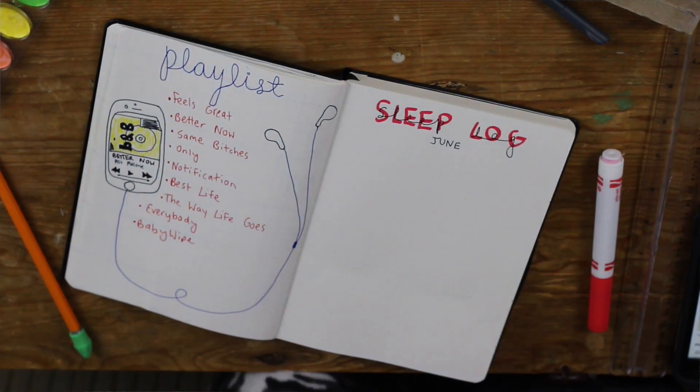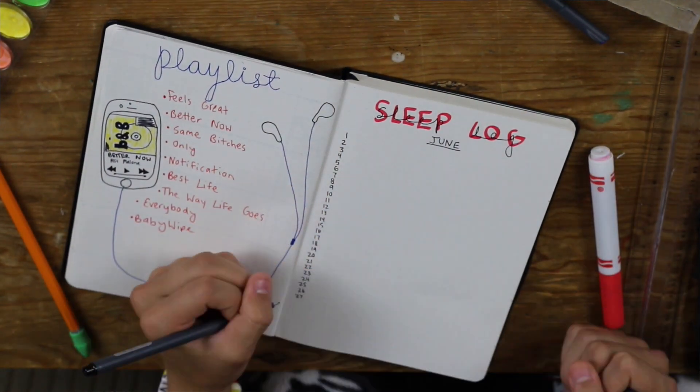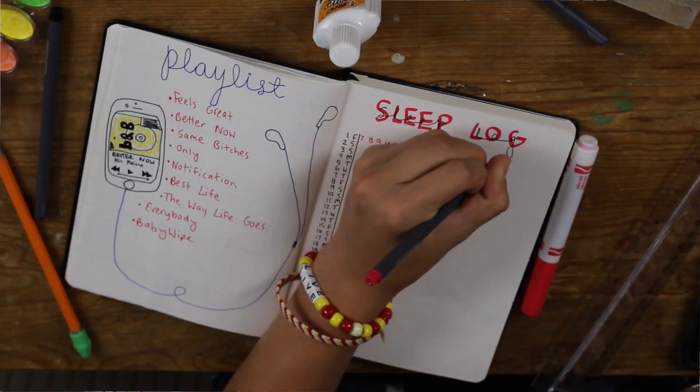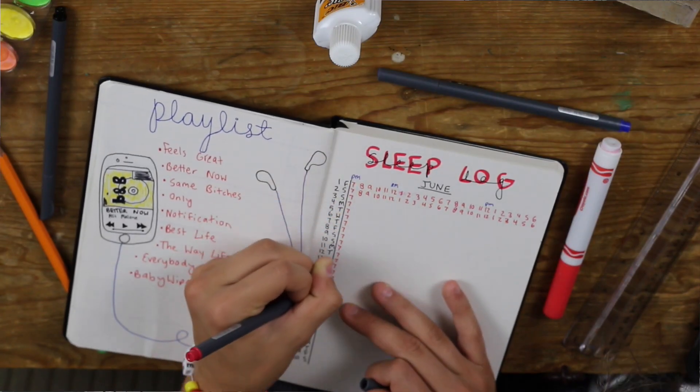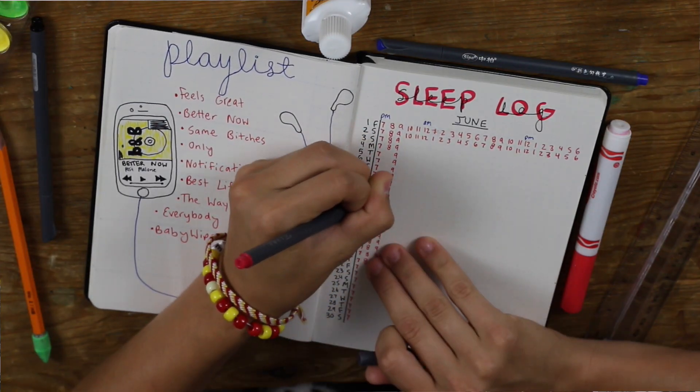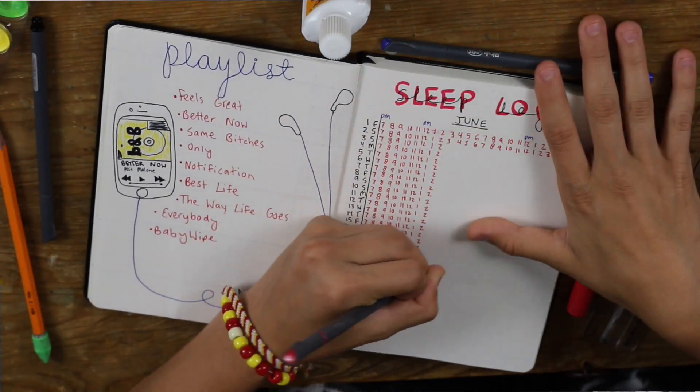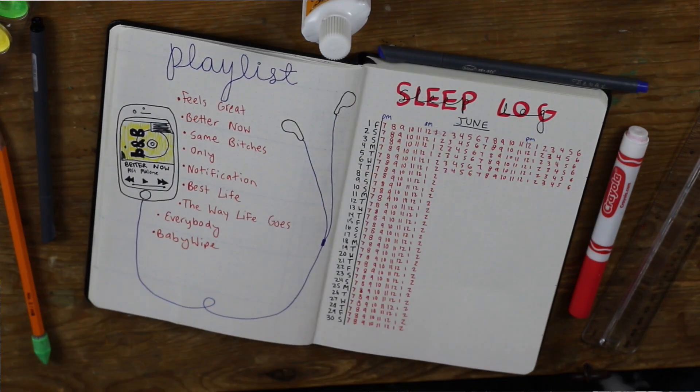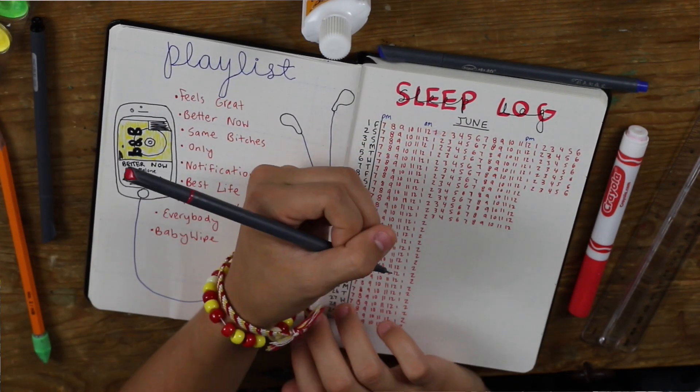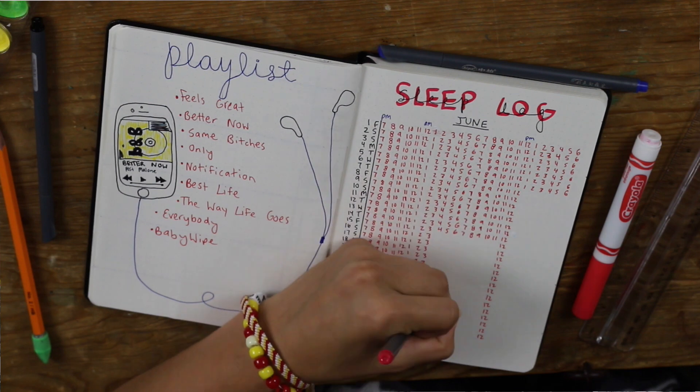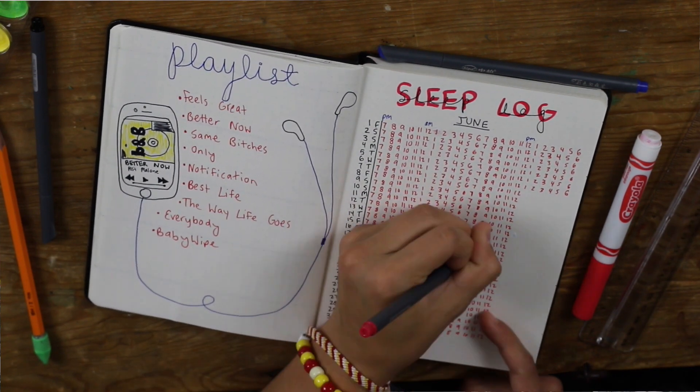I feel like sleep is super important, so I wanted to do a sleep log for June. While this was the most time consuming and tedious thing ever, I think it's going to be really helpful in the long run because I can figure out how much I slept easily. Basically you take a marker and highlight all the hours you were asleep at night, or even if you took a nap, so you can calculate and see it. I think it's a really cool spread.